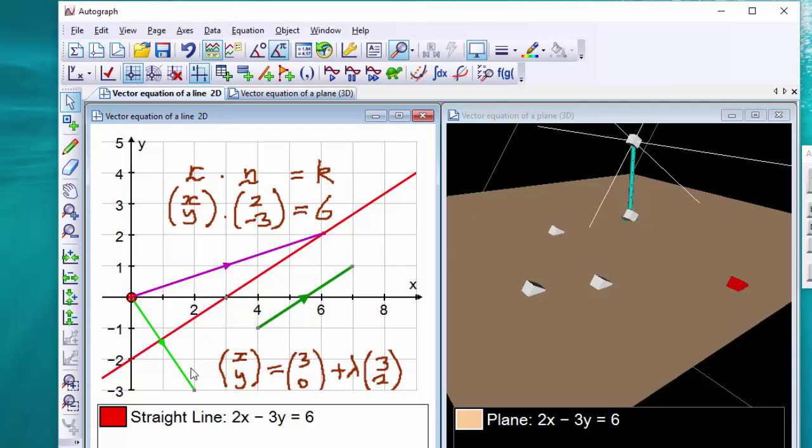Now, is it just a coincidence that those numbers 2 and minus 3 are the coefficients of the implicit form for this straight line, 2x minus 3y? Well, it's not, and you can certainly explore that in more detail, and of course this translates perfectly to the three-dimensional case.